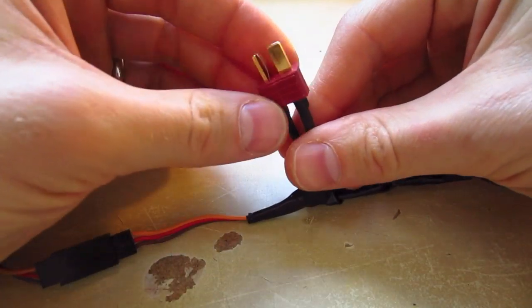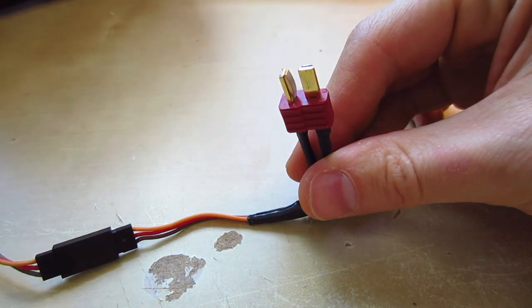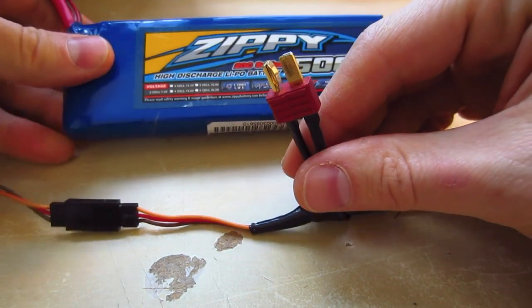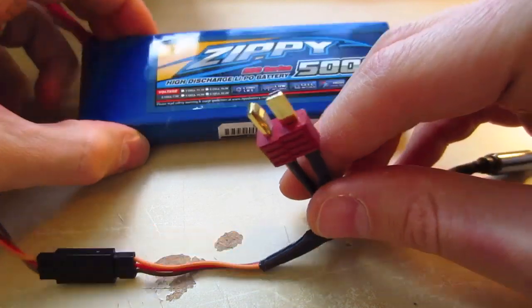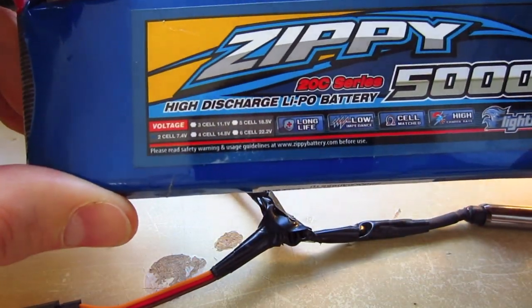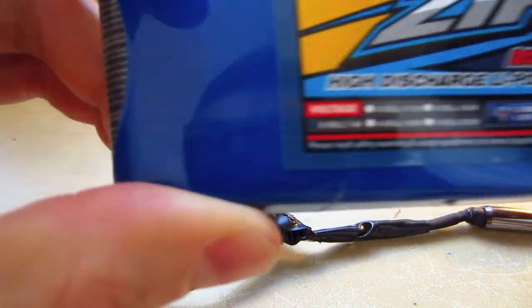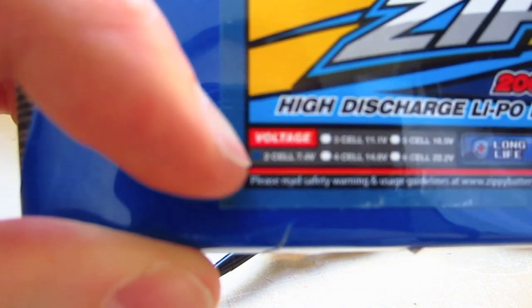And then I also have a Deans connector here because that is going into the battery to power the Dragonlink. And this is a two cell lipo, 7.4 volt two cell lipo.